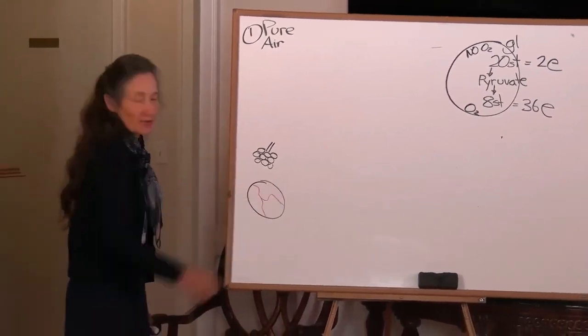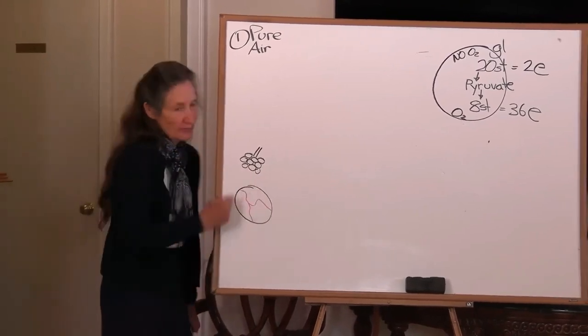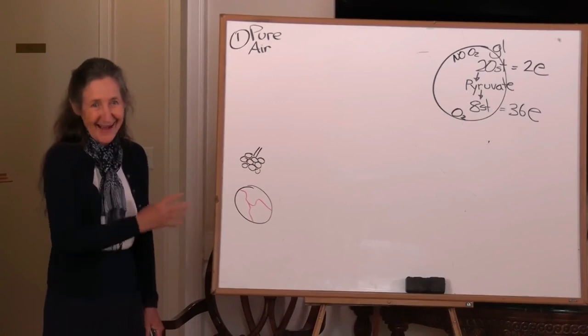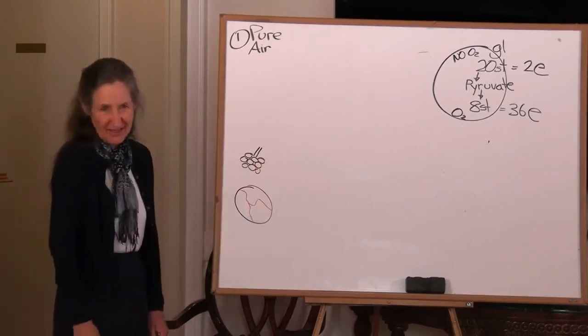So that's where it all happens, is right down there. So how many of these do we have? We've got about 300 million alveoli in our lungs. And that's where the gaseous exchange takes place.